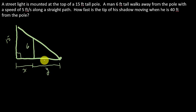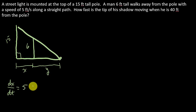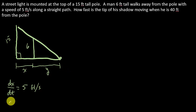Let's write down what they want us to find and the information they give us. They tell us he's walking at 5 feet per second — that's the change in X, how fast this distance is changing. So we know that dX/dT is equal to 5 feet per second. What are they wanting us to find? How fast is this point changing — we need to know how fast the distance X plus Y is changing. That's what we're looking for.